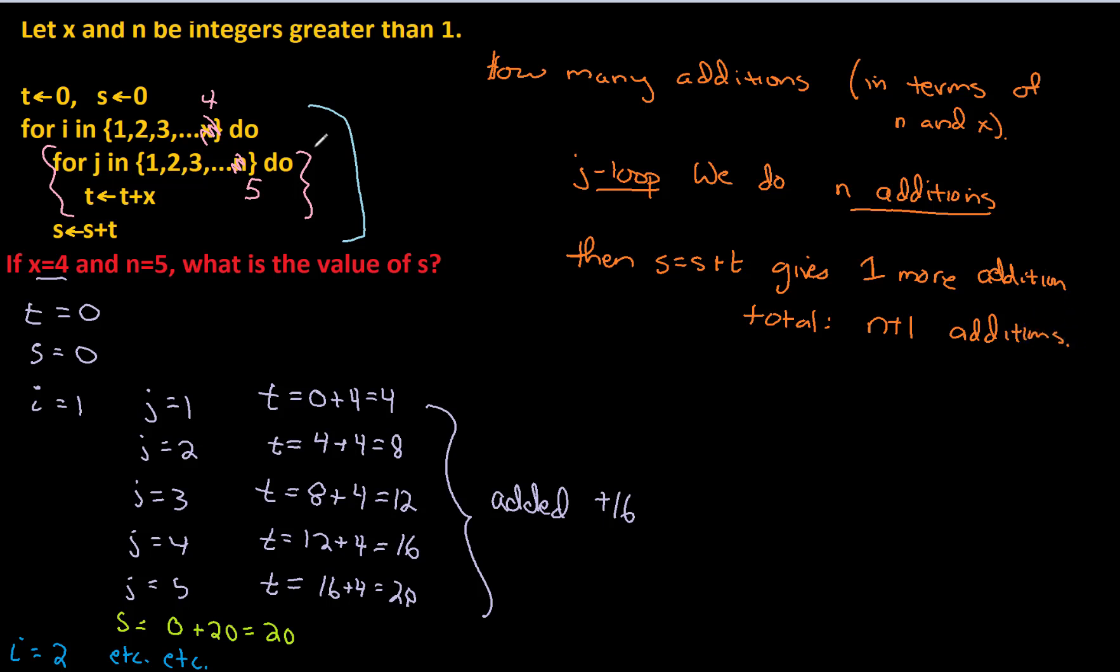Okay, so I've taken care of all this business. I always count my operations from the inside out. And it's just a lot easier to do it that way. And all of that code is sitting inside the i loop. And the i loop runs around x number of times.